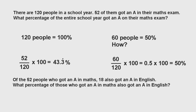Going off the same example, let's get a bit more practice. Of the 52 people who got an A in maths, 18 also got an A in English. What percentage of those who got an A in maths also got an A in English? It's always important to read the question carefully. Here, the 52 people who got an A in maths are now our 100%. So we take the 18 who got an A in English, divide by 52, times by 100, and we get 34.6%.